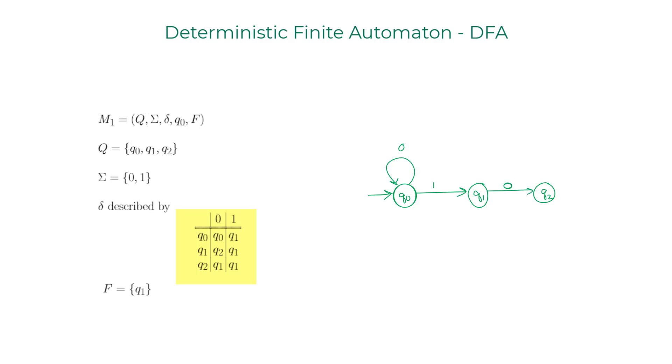Q1, when it receives 0, it goes to Q2. And then if it receives 1, it's going to loop back. And finally Q2, if it receives 0 or 1, it's going to go back to Q1. There we go.